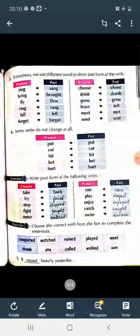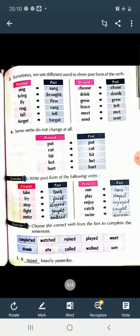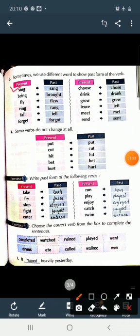Now see next example. Sometimes we use different word to show past form of verb. कभी-कभी हम past form के लिए different word use करते हैं. Sing, sang. Bring, brought. Fly, flew. Ring, rang. Fall, fell. Forget, forgot.